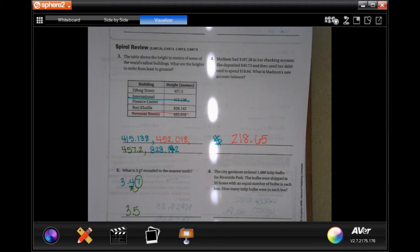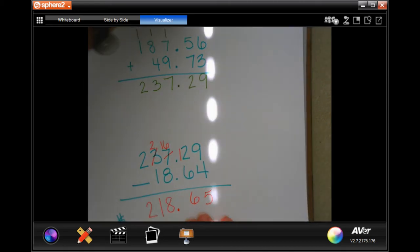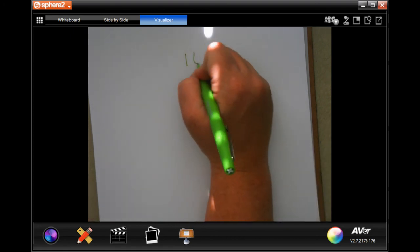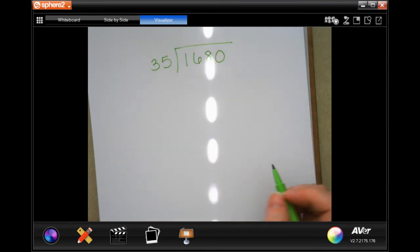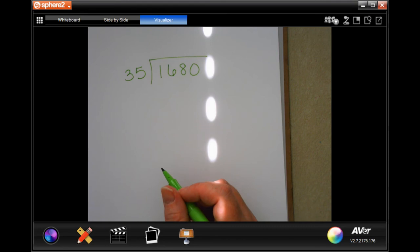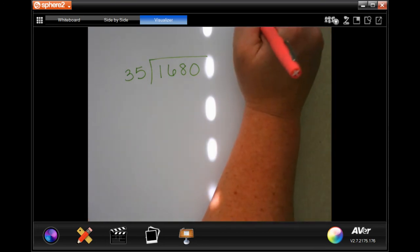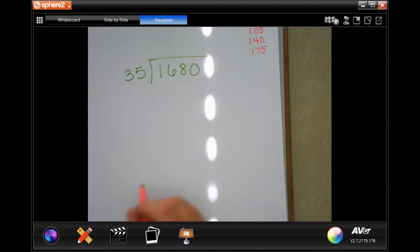The city gardener ordered 1,680 tulip bulbs for Riverside Park. The bulbs were shipped in 35 boxes with an equal number of bulbs in each box. How many tulip bulbs were in each box? So, I am going to write in the total number of bulbs. And I'm going to divide that by the 35 boxes that they were sent in so that I know how many bulbs were in each box. Now, I don't know my multiples of 35. At least not very well. So, I'm going to put down 35, 70, 105, 140, 175. And hopefully, I won't have to go any further than that.